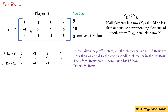So, in the given payoff matrix, all the elements in the third row are less than or equal to the corresponding elements in the first row. Therefore, row 3 is dominated by the first row. Then, we have to delete the third row.